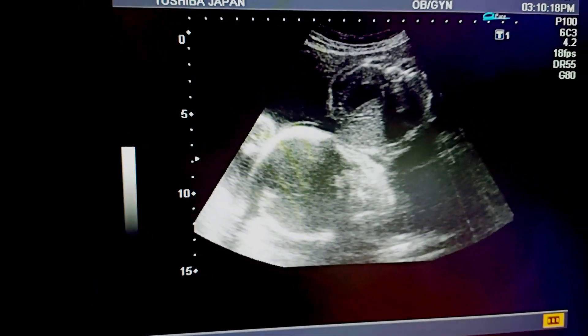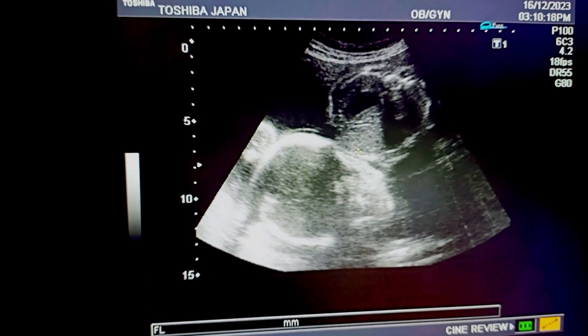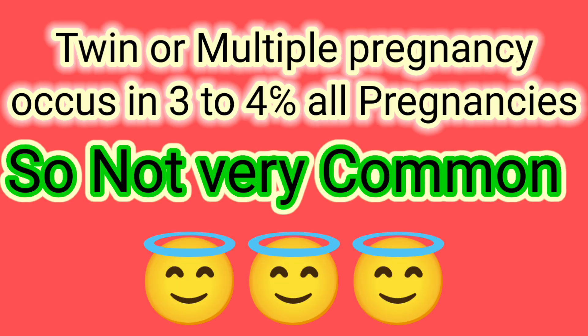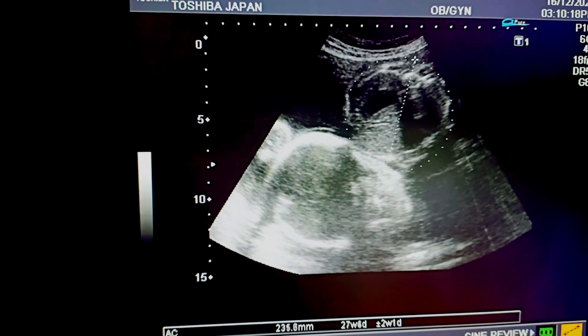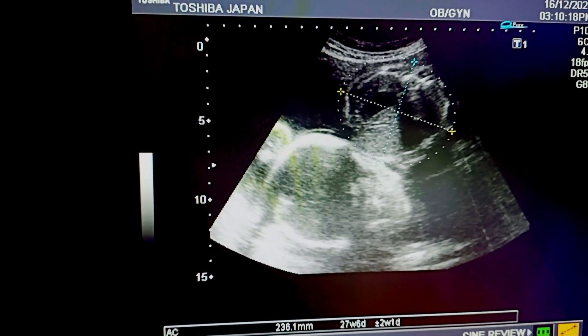To calculate the fetal age, we will also measure the femur length. Twin or multiple pregnancies occur in three to four percent of all pregnancies, so it is not very common but it does occur in three to four pregnancies out of every 100.